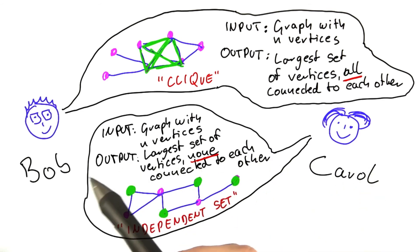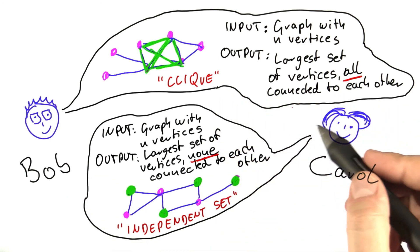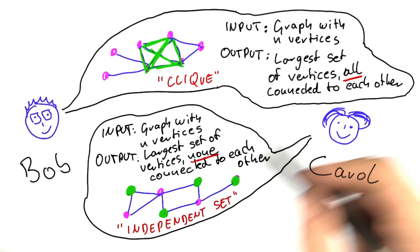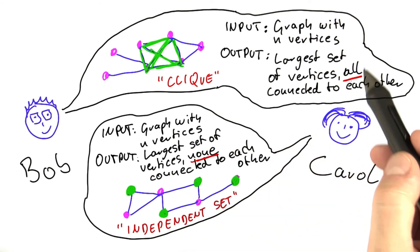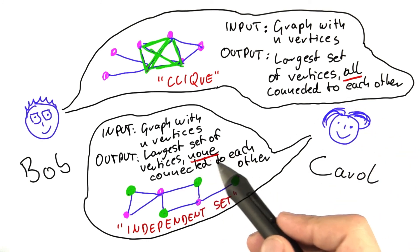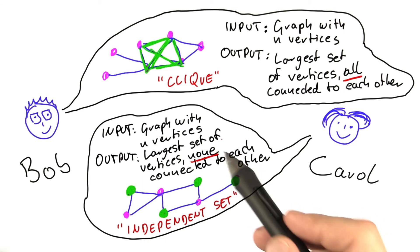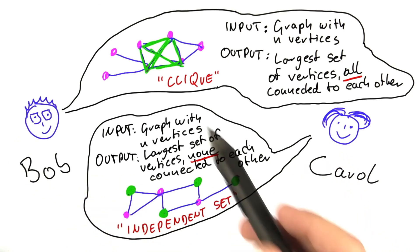So now, after Bob and Carol have explained their problems to each other and given it a name, they notice since the only difference between clique and independent set is that in one we're looking for all vertices to be connected, and in the other one we're looking for none of the vertices to be connected, their problems are actually very closely related. And I will show you the idea that they come up with to figure out how similar those problems are also from an algorithmic perspective.